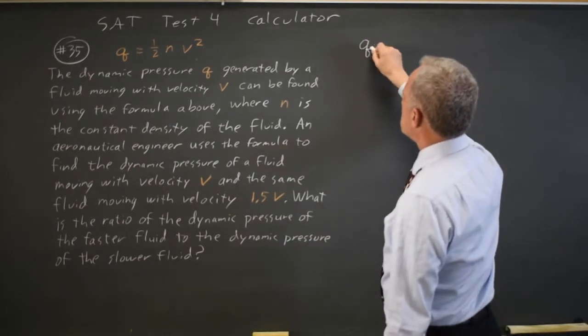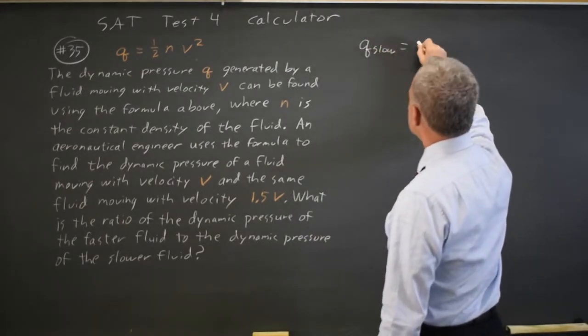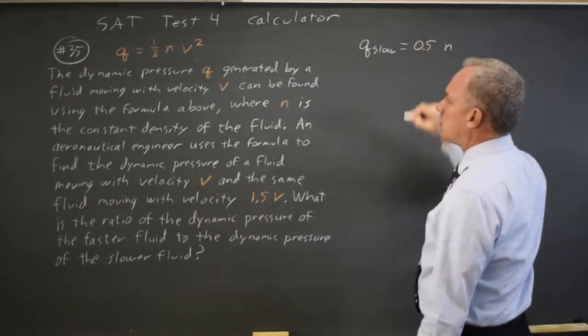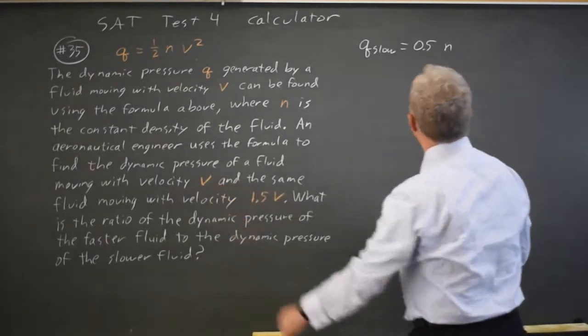So Q for the slow fluid is 1 half, which I'll write as 0.5, times N times V squared, and we just get the velocity as V.